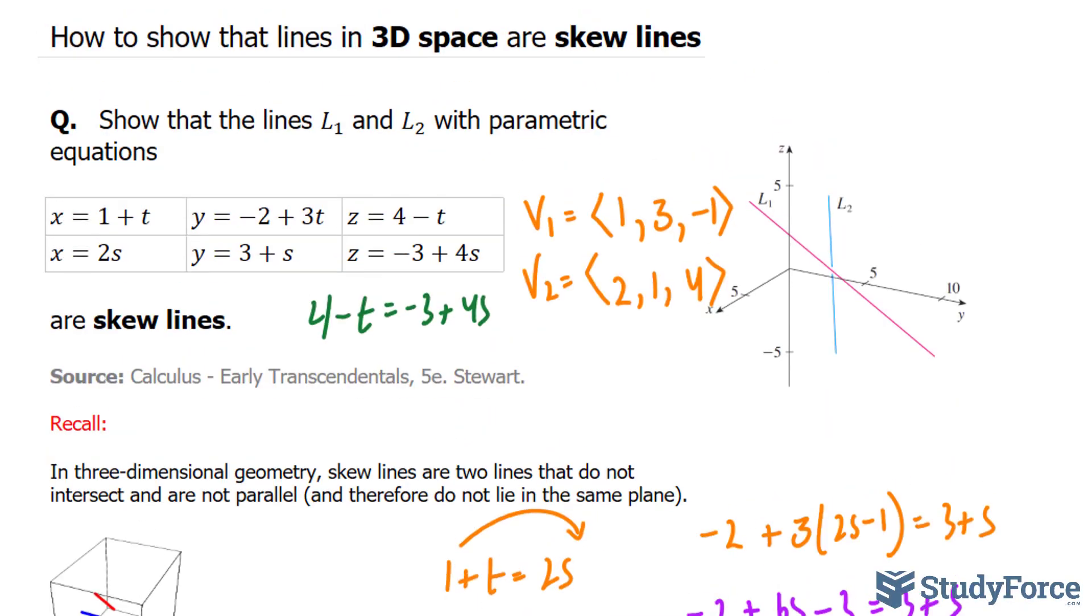And there you have it. That is how to show that two lines in 3D space are skew lines.